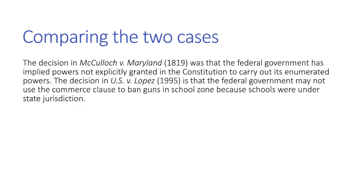Comparing the two cases: McCulloch v. Maryland (1819) established that the federal government has implied powers not explicitly granted in the Constitution to carry out its enumerated powers, expanding federal government authority. U.S. v. Lopez (1995) held that the federal government may not use the Commerce Clause to ban guns in school zones because schools are under state jurisdiction. McCulloch expands federal power; Lopez sends authority back to the states. This concludes our lecture on federalism Supreme Court cases.